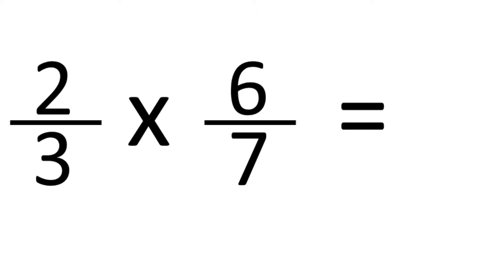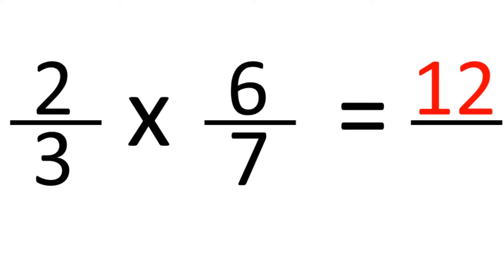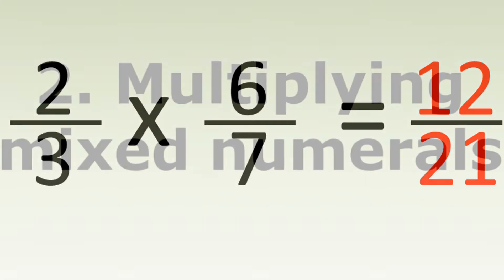All you do is multiply the numbers on the top — the numerators — so 2 times 6 is 12, and then the numbers on the bottom — the denominators — 3 times 7 is 21. And that's it. The answer is 12 over 21. Easy.